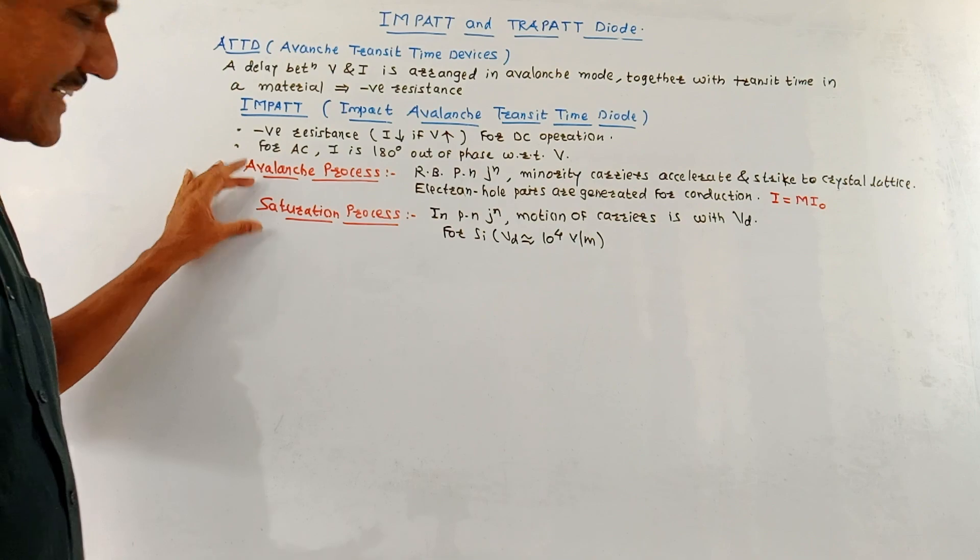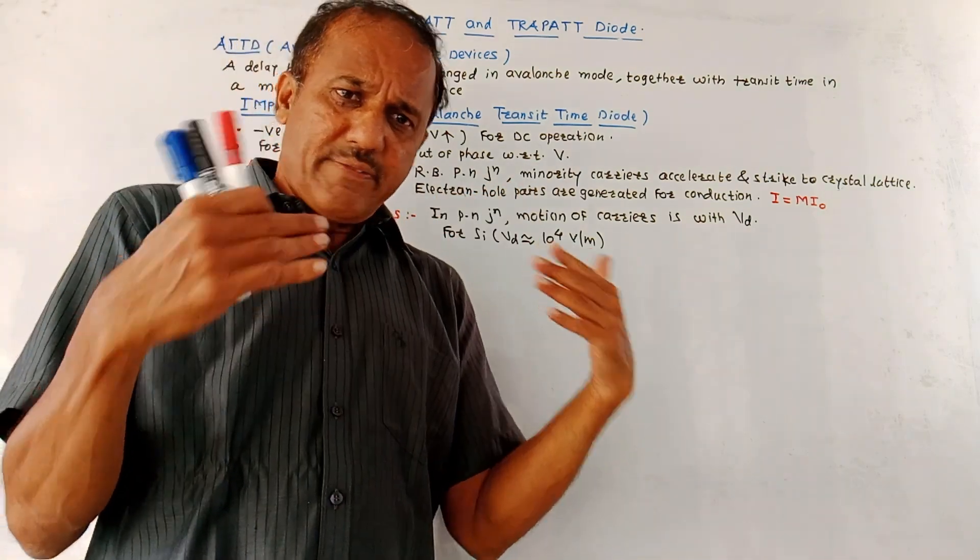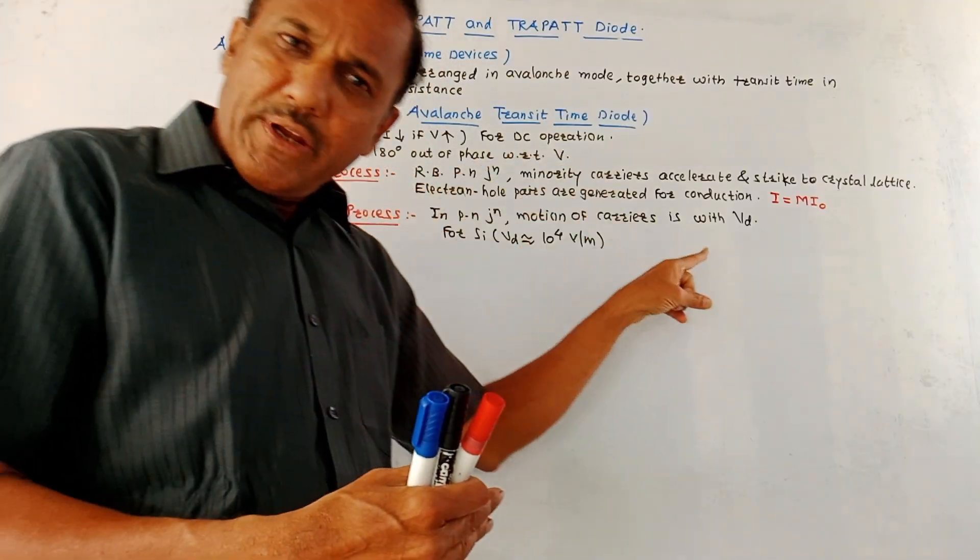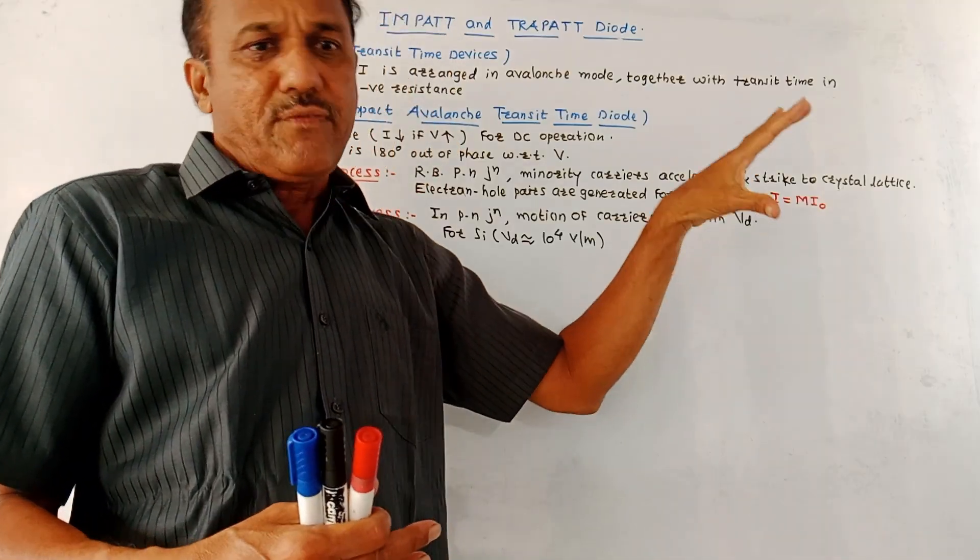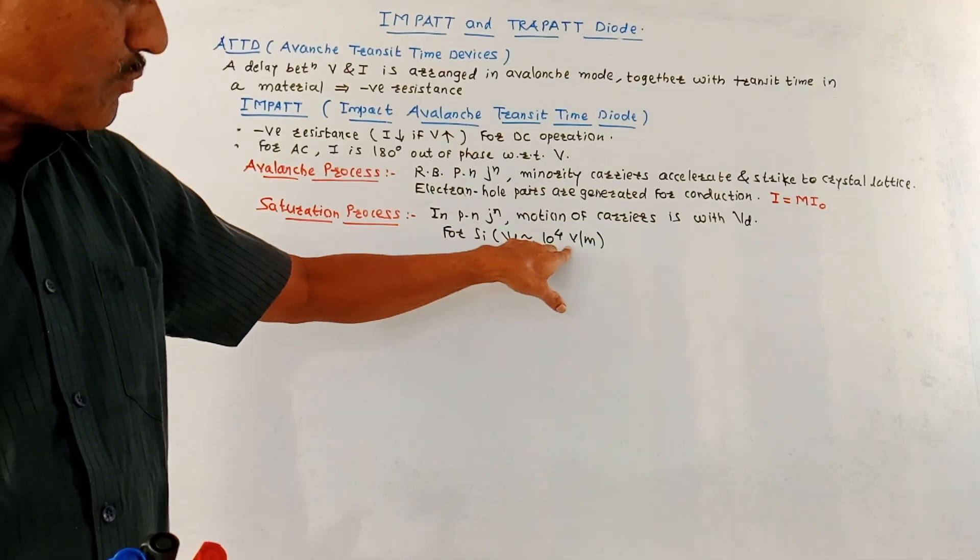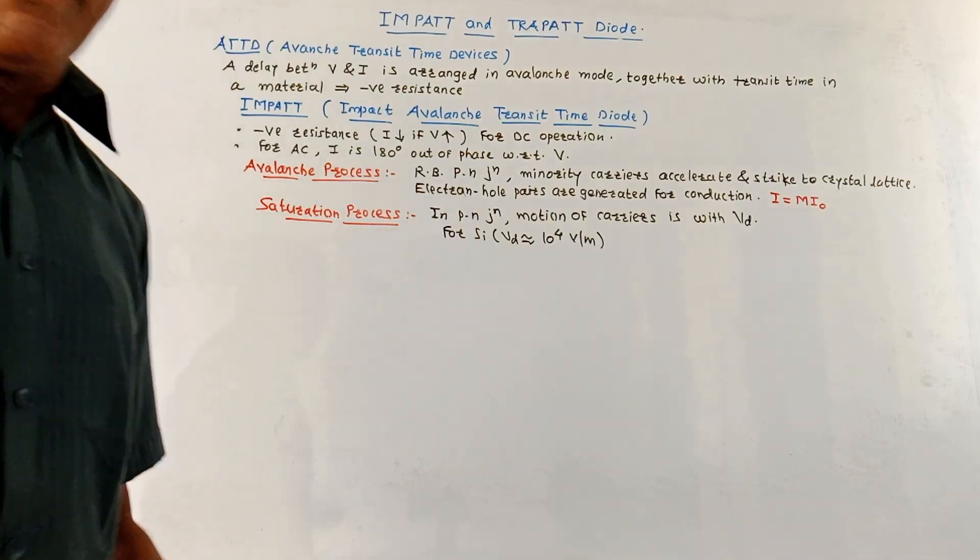Second process is the saturation process. Almost in all semiconductor devices, the saturation takes place. So in a PN junction, the motion of electrons is given by Vd that is called drift velocity. A typical value for silicon material is 10 raise to 4 volts per meter. Now let us discuss the working of this IMPATT diode.